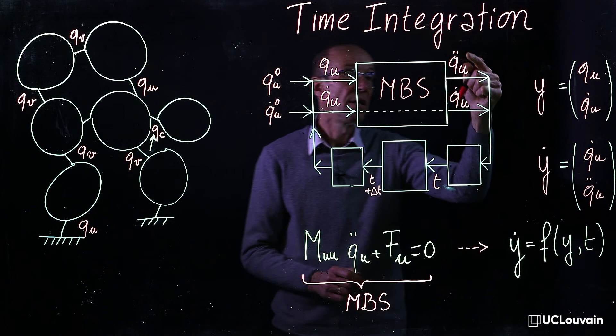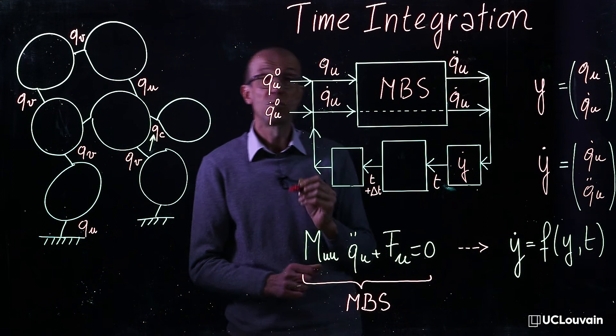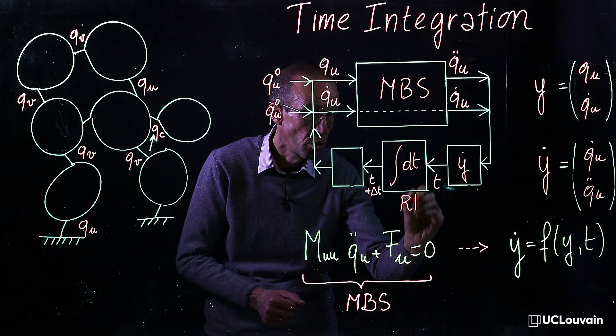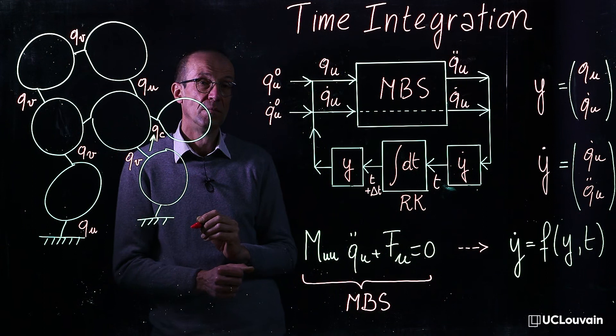Then by gathering these two variables into the y-dot vector, this one can be time-integrated using, for instance, a Runge-Kutta technique into the y-vector, and then the loop is closed.